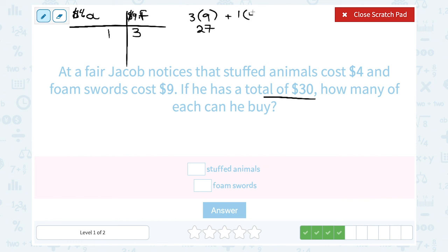This is a little bit too big because 27 plus 4 adds up to 31 and not 30. So that doesn't quite work out. So he must have bought less foam swords. Let's say he bought two foam swords.